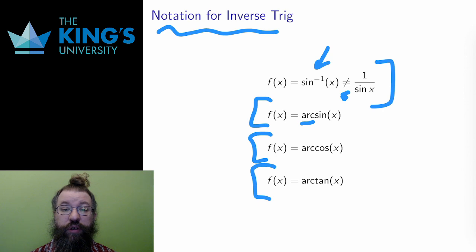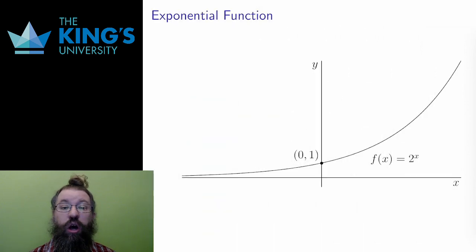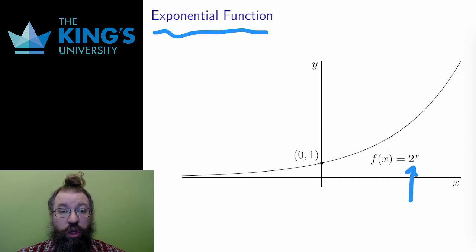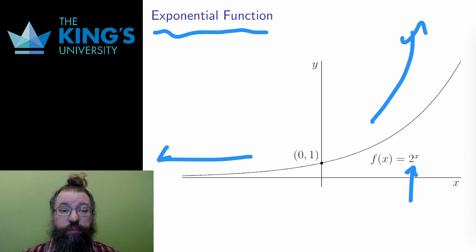After the trig and inverse trig functions, the next type of transcendental functions are the exponential functions. In many ways, the exponential functions can be called the most important functions in mathematics. The exponential function is ubiquitous in applications, as I shall show in the course. An exponential function is f of x equals a to the x for some base a. In this diagram, I've shown f of x equals 2 to the x, so the base is 2. The graph of an exponential function looks like the diagram here. It levels off to the negative side and grows very quickly in the positive direction. All exponential functions go through the point 0, 1, since regardless of the base, a to the 0 is always 1.